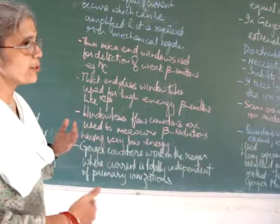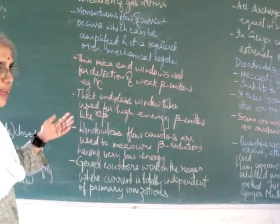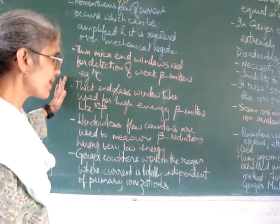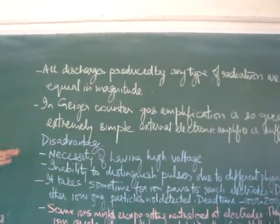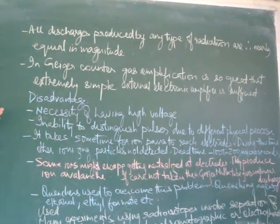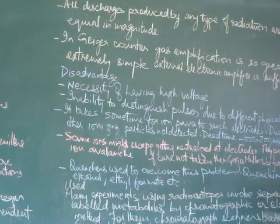Further increase in potential difference between the two electrodes will not cause an increase in the current produced by the tube. All discharge produced by any type of radiation are nearly equal in magnitude, whether alpha, beta, or gamma. In Geiger counters gas amplification is so great,